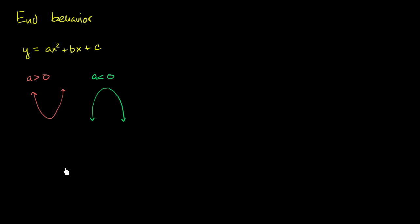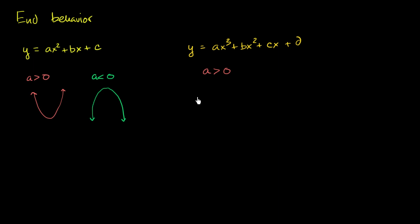We've spent less time with third degree polynomials, but we've seen those a little bit. For example, if you have the third degree polynomial y is equal to ax to the third plus bx squared plus cx plus d, if a is greater than 0, when x is really, really, really negative, this whole thing is going to be really, really, really negative. And then it's going to increase, and as x becomes more and more positive, it will become more and more positive as well.